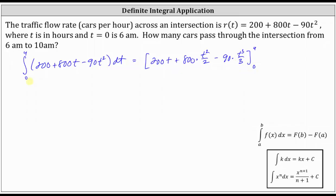And now let's simplify the antiderivative. We have 200t and then plus 400t² and then minus 30t³.